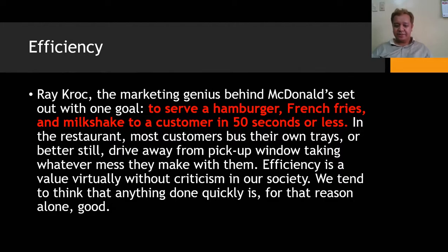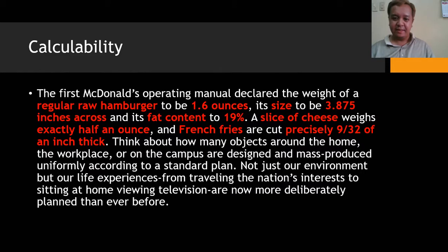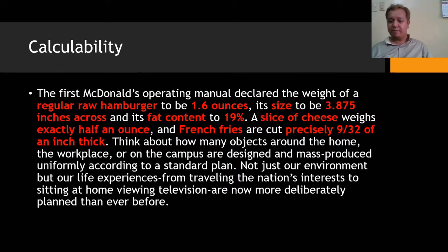Calculability: the first McDonald's operating manual declares that a regular raw hamburger weighs 1.6 ounces, is sized to 3.875 inches across, and has a fat content of 19%. A slice of cheese weighs exactly half an ounce, and french fries are cut precisely 9/32 of an inch thick. Think about how many objects around the home, workplace, or campus are designed and mass-produced uniformly according to a standard plan.